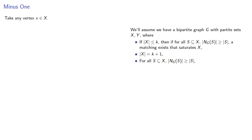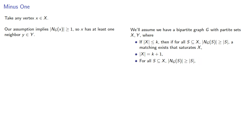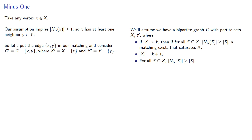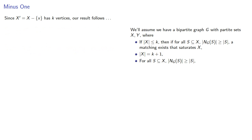Let's take any vertex in our set x. Our assumption implies that the neighborhood of this lone vertex has cardinality greater than or equal to 1, so it has at least one neighbor in y. So let's put the edge (x, y) in our matching and consider a new graph g prime, which is g minus both vertices x and y, where x prime is x minus x and y prime is y minus y. And since x prime has k vertices, our result follows, provided every subset has its neighborhood larger than the subset itself.